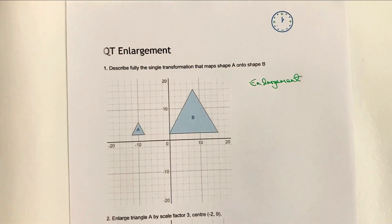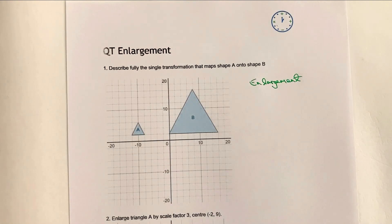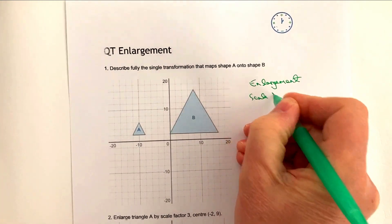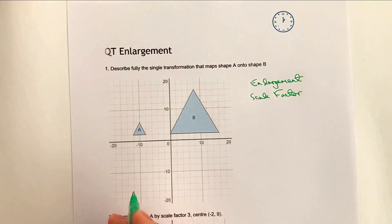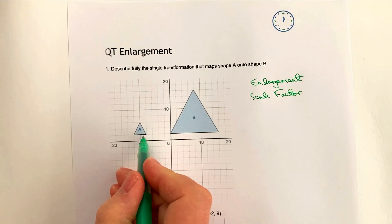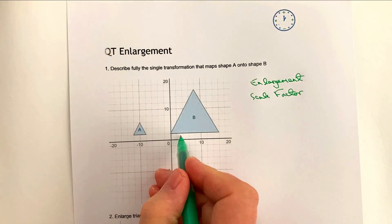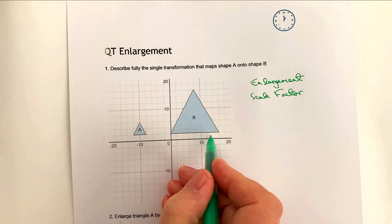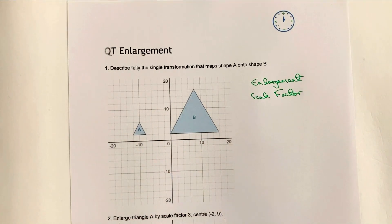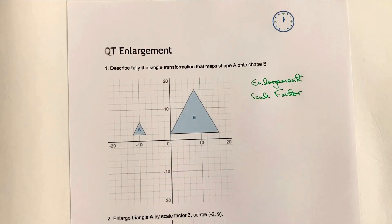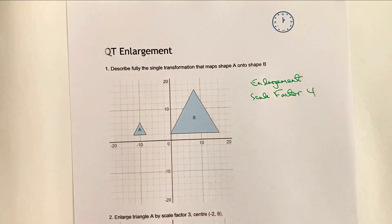The second mark requires stating the scale factor — in other words, how much bigger is shape B than shape A. The easiest way to work that out is to look at one line. This line is two units across here, and shape B's corresponding line is eight units. So it's gone from two units to eight units, meaning it's four times bigger — a scale factor of four, because four times two is eight.